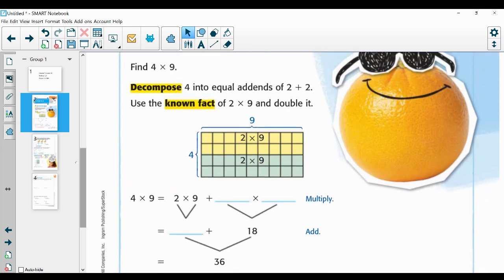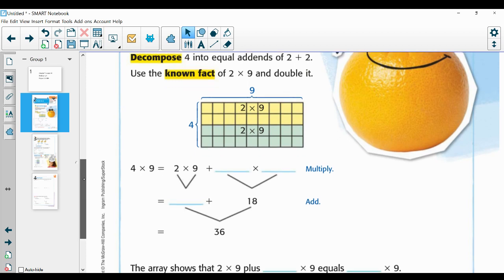Now remember our word decompose means to break apart. So we're going to decompose 4 into two equal addends of 2 + 2. Two plus two equals four. We're going to use the known fact of 2 × 9 and double it. The reason why we're using nine is because that's my other factor in my original problem. So here you can see an array of four rows of nine, and I've divided them into two rows of nine and two rows of nine. So once I know what two rows of nine is, I can add those together and get the total, get the product for the original problem.